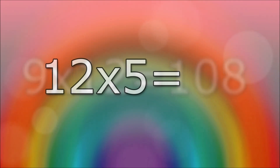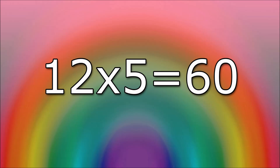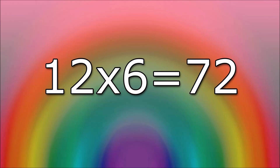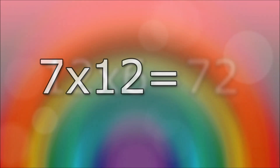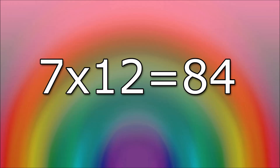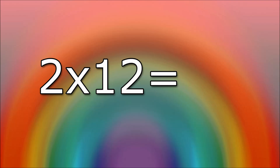12 times 5 equals 60. 12 times 6 equals 72. 7 times 12 equals 84. 2 times 12 equals 24.